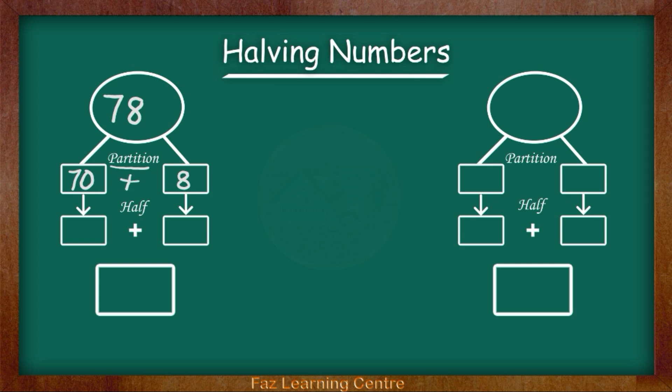Now that I have successfully partitioned the number 78 and my answer is 70 add 8 equals 78, I am now going to half. Half of 70 equals 35. Half of 8 equals 4. Now when I add my findings which is 35 add 4, my answer is 39.